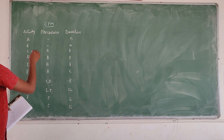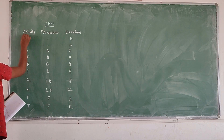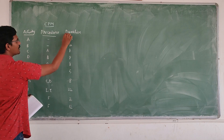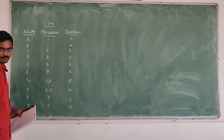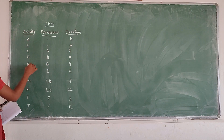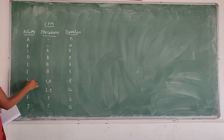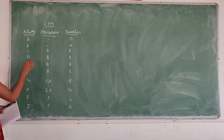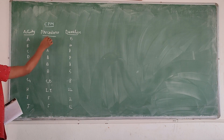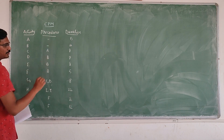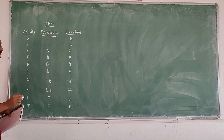The project scheduling. The problem gives the activity precedence and the duration. The activities are A, B, C, D, E, F, G, H, I, J. The corresponding precedence and corresponding duration are also given.